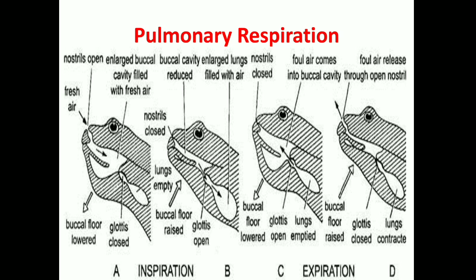To summarize the four steps of pulmonary respiration: Step 1 — aspiration: sternohyal muscle contracts, buccal floor lowers, air enters from outside into buccal pharyngeal cavity. Step 2 — inspiration: petrohyal muscles contract, buccal floor raises, air moves from buccal pharyngeal cavity to lungs. Step 3 — first part of expiration: sternohyal muscle contracts, buccal floor lowers, air moves from lungs back to buccal pharyngeal cavity. Step 4 — final expiration: petrohyal muscles contract, air moves from buccal pharyngeal cavity to outside.